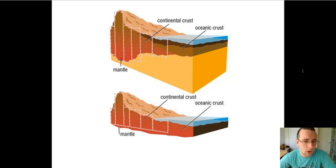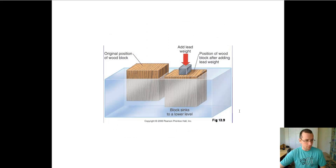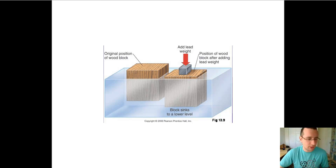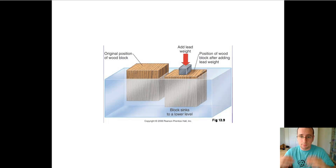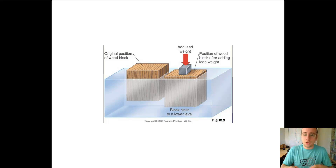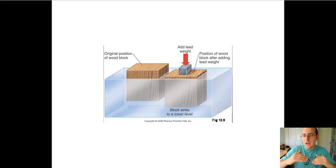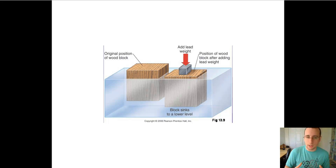What is actually generating this view? To understand what causes this, you have to understand the idea of isostatic adjustment. It has to do with the balance between the buoyancy force and density, and also gravity and weight — buoyancy versus gravity, or density versus weight.